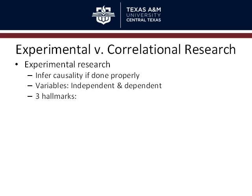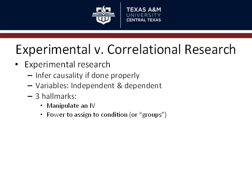The three hallmarks of experimental research: obviously, you have to manipulate an independent variable, so you do something different to at least two groups. You have to have the power to assign participants to condition or to groups — participants don't get to pick what group they're in, they're not pre-existing groups, the experimenter puts them in different groups. And to have the most internal validity, you should be randomly assigning people to different levels of the independent variable.